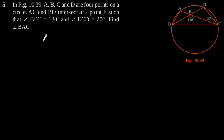Exercise 10.5, Question number 5. In figure 10.39, A, B, C, and D are four points on a circle. AC and BD intersect at point E such that angle BEC is equal to 130 degrees and angle ECD is equal to 20 degrees.